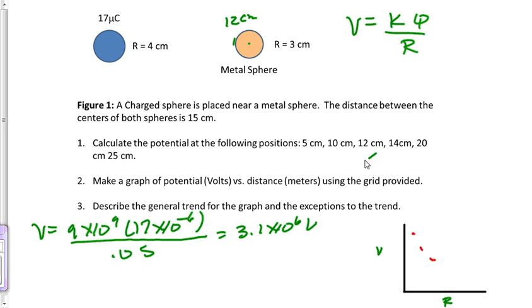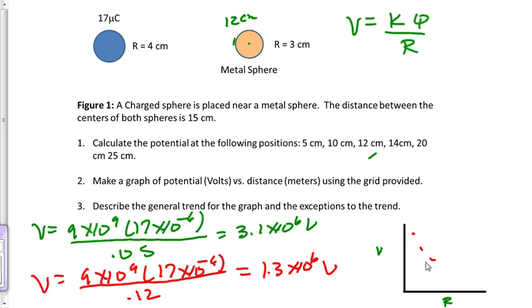Let's calculate that position 12 there. So volts is equal to 9 times 10 to the 9th, multiplied by 17 times 10 to the minus 6, and we'll divide this by 0.12, and that's going to equal 1.3 times 10 to the 6th volts.